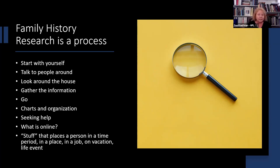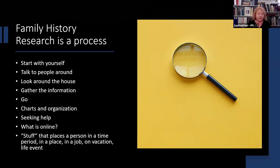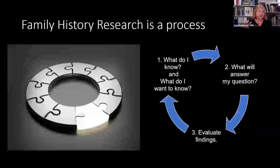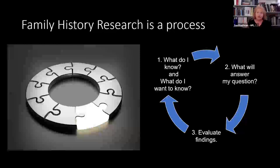Go to your charts and get organized in what you have. Put things in piles by families, look at those charts, see if anybody else has done research, seek help, talk to us, talk to other family members or friends that do research, and find out what's online. What you're actually looking for is stuff that places a person in a time, in a location, an event, in a job. Do you have ID cards from relatives? Are there pictures of vacations? What kind of life events do you have from things around the house?